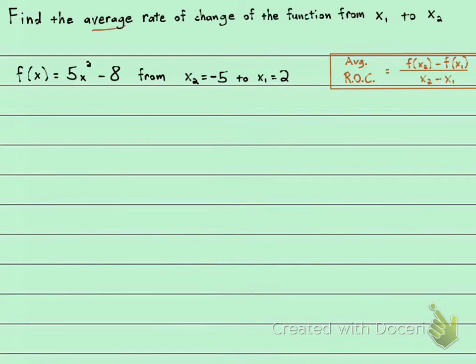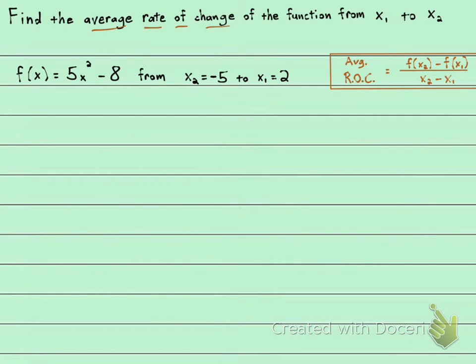We're going to find the average rate of change of this function right here, 5x squared minus 8, from these two points on the x-axis, from negative 5 to positive 2.